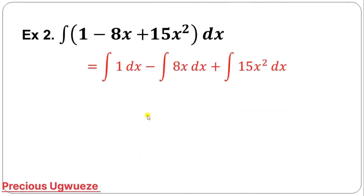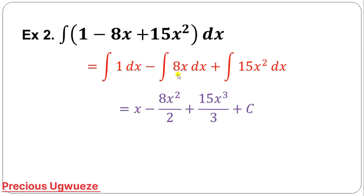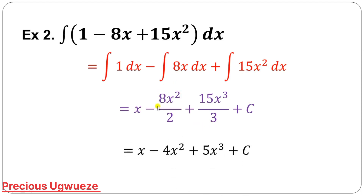For Example 2, we integrate with respect to x by integrating each term individually. Integrating 1 gives x. Integrating 8x gives 8x squared over 2. Integrating the next term gives the power plus 1 over 3. When we simplify, 8x squared over 2 gives 4x squared, and the next term simplifies to 5x cubed, plus constant C.